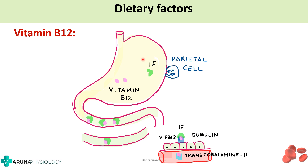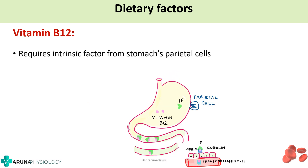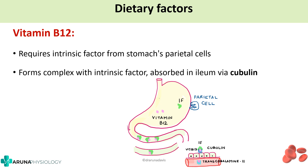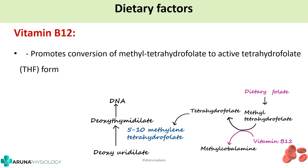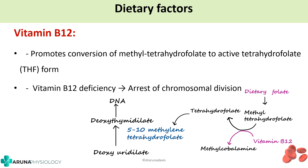That is the role of intrinsic factor — if it is not there, it will be difficult for absorption of vitamin B12. Vitamin B12 is absorbed in the ileum via cubulin, transported with transcobalamin 2, and finally stored in the liver. Vitamin B12 promotes conversion of methyl tetrahydrofolate to active tetrahydrofolate. That is why whenever there is a deficiency of vitamin B12, there will be an arrest of chromosomal division.